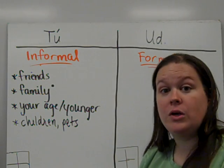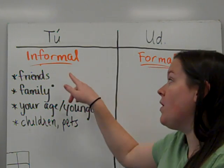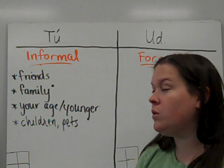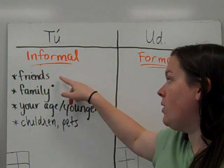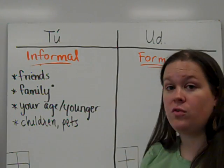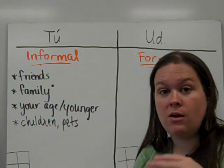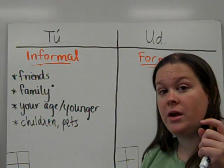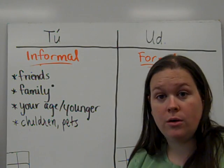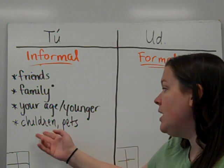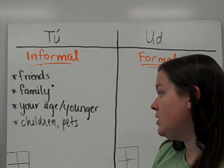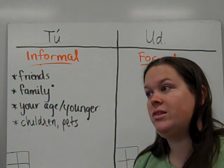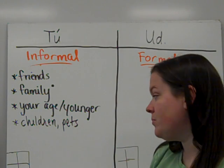In regards to tú — tú is the more informal one. Remember, that means more casual. So any of your friends, family members, people that are your age or younger that you can be more casual with — children, pets, anything like that.